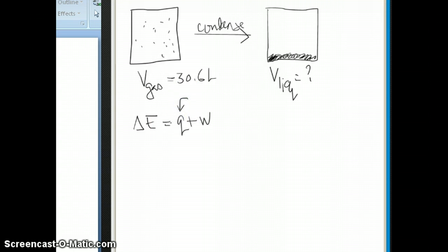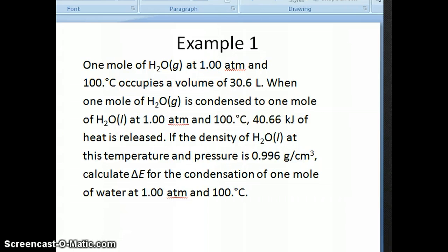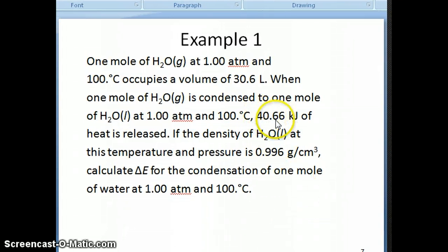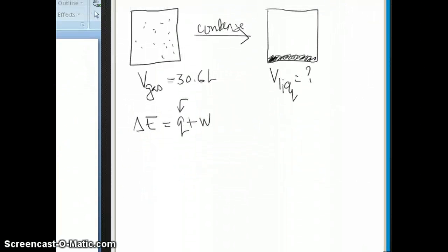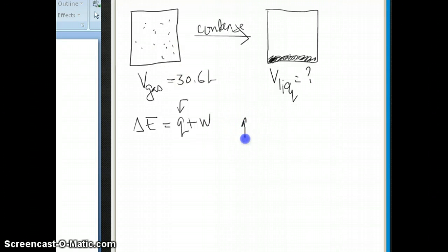If you look back at the question, it says that 40.66 kilojoules of heat is released. So in other words, we're given Q. So Q, in this case, is negative 40.66 kilojoule. Because it's released, we know it's negative. That's why I put the negative right there. And then it's the work that we have to calculate. Now we know that work is equal to negative P external times delta V. So it's negative P external times delta V.